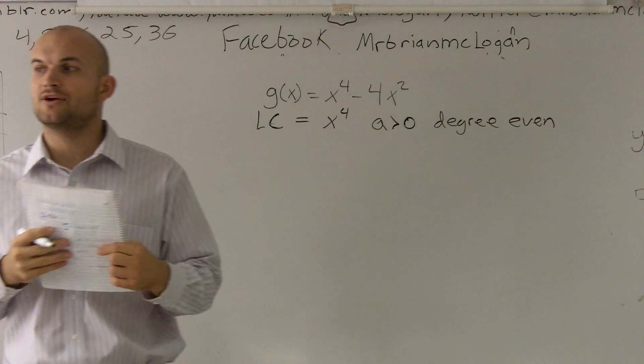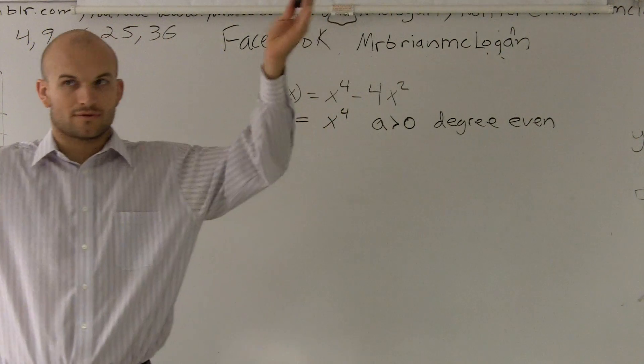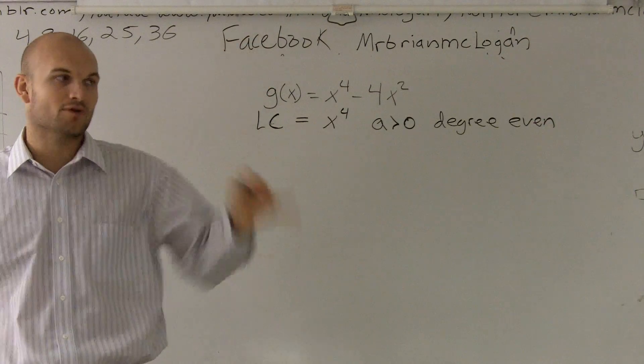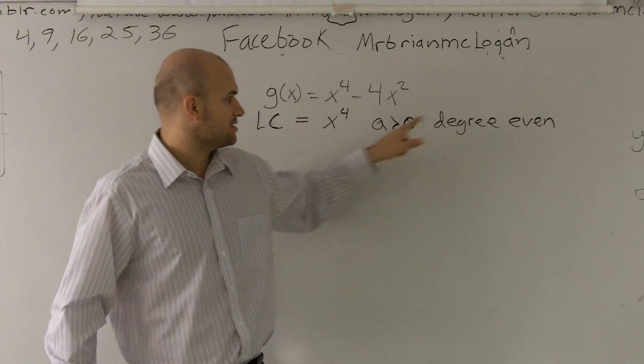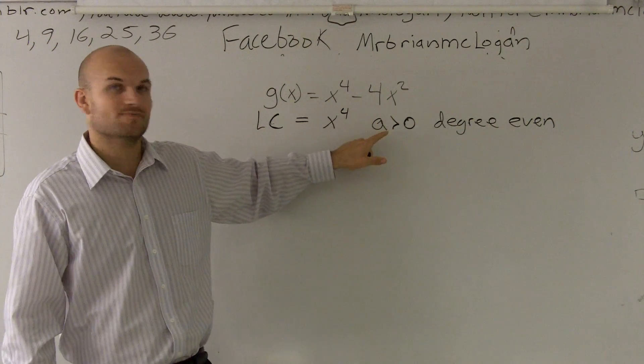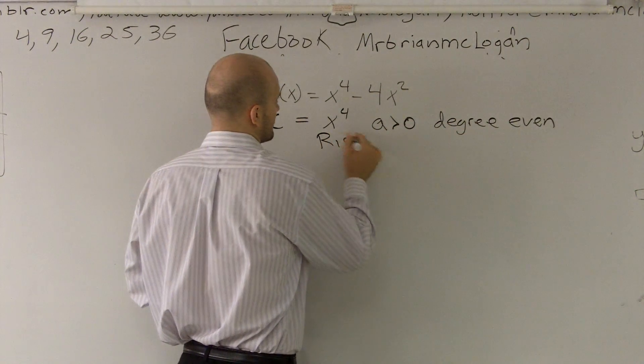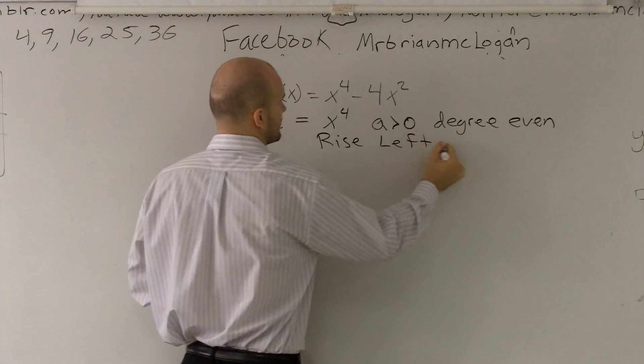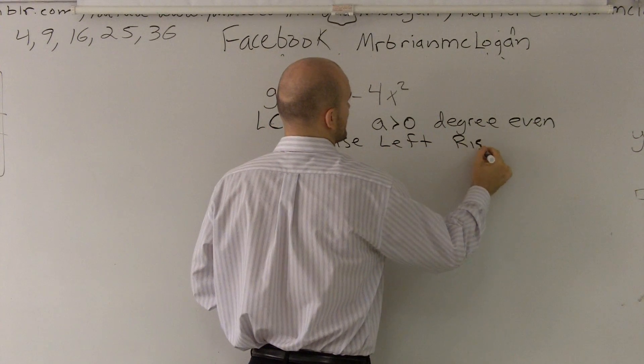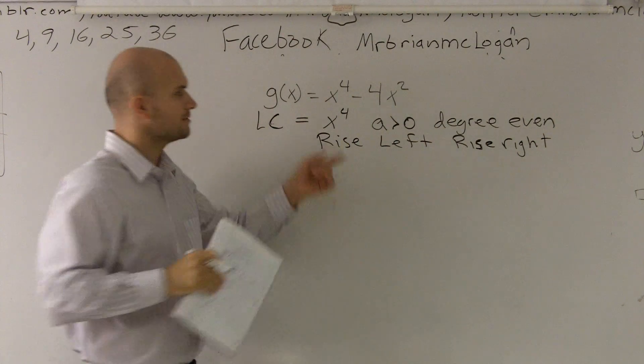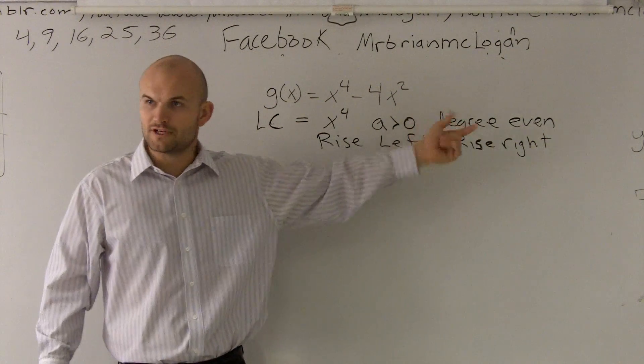So when it's even, our end behavior is either both going up or both falling. So they're both rising or both falling. And it all depends on if my a is positive. Since a is positive and my degree is even, I am going to rise left and rise right. That's your leading coefficient test.